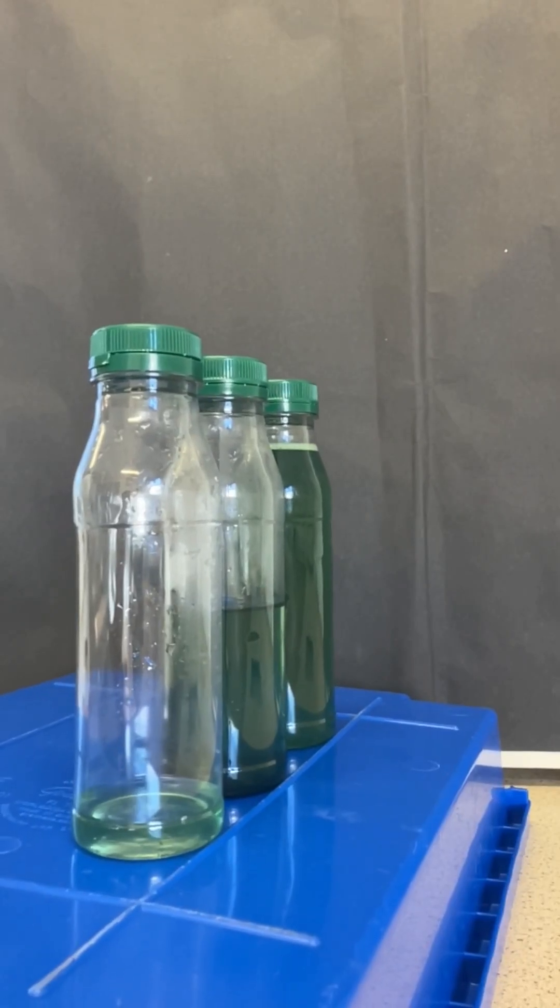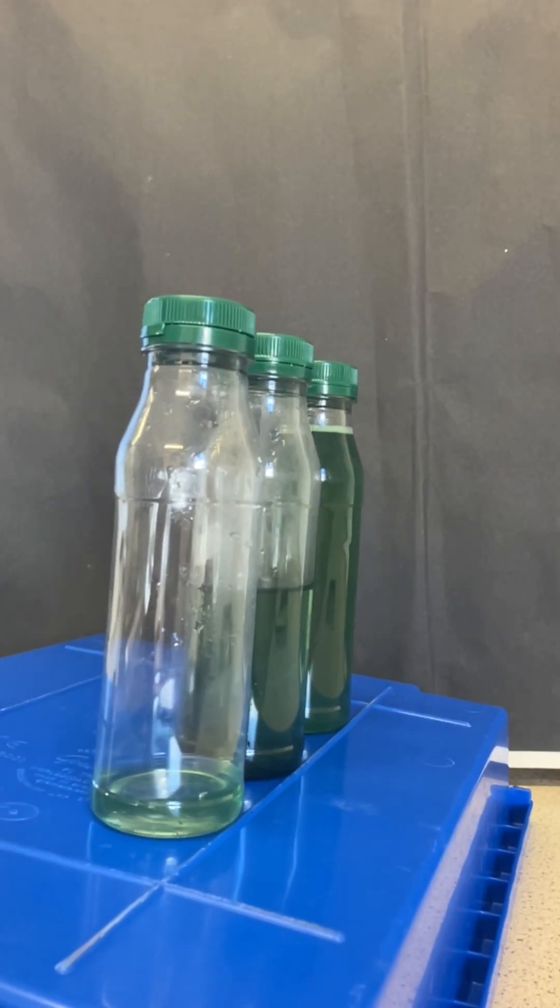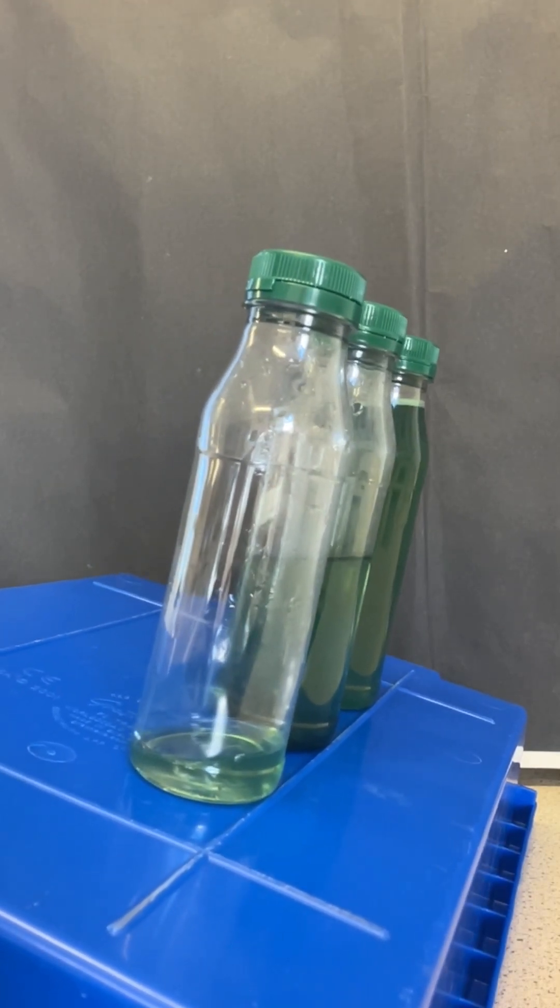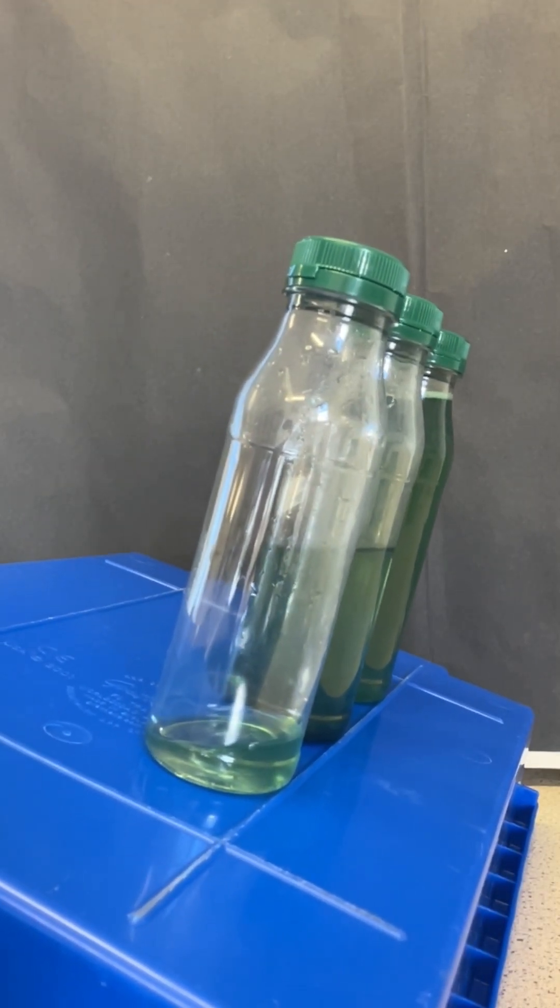Three bottles, all the same. One almost empty, one almost full, and one half full. But what's the order that they'll topple over as we tilt them to a bigger angle? Can you predict it?